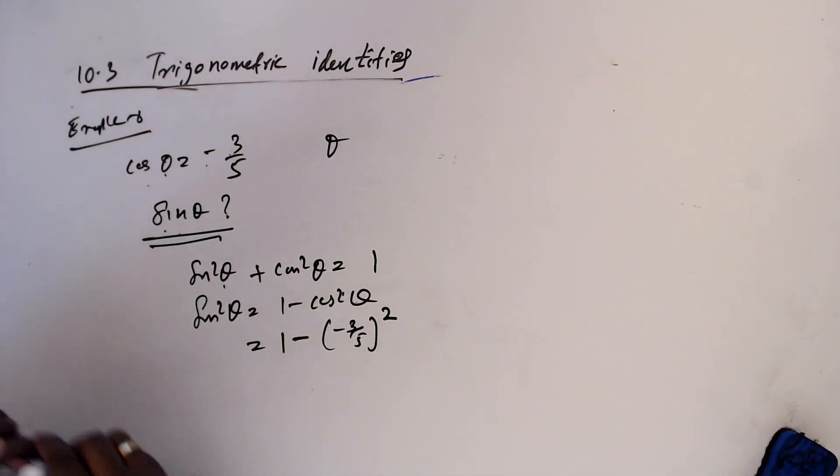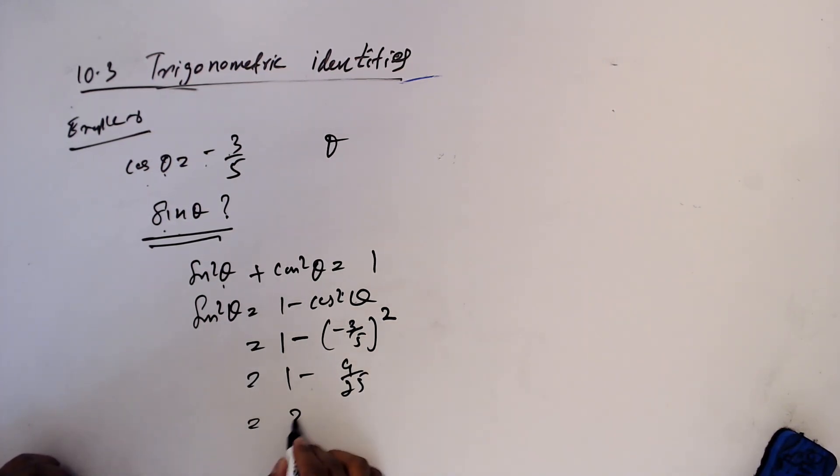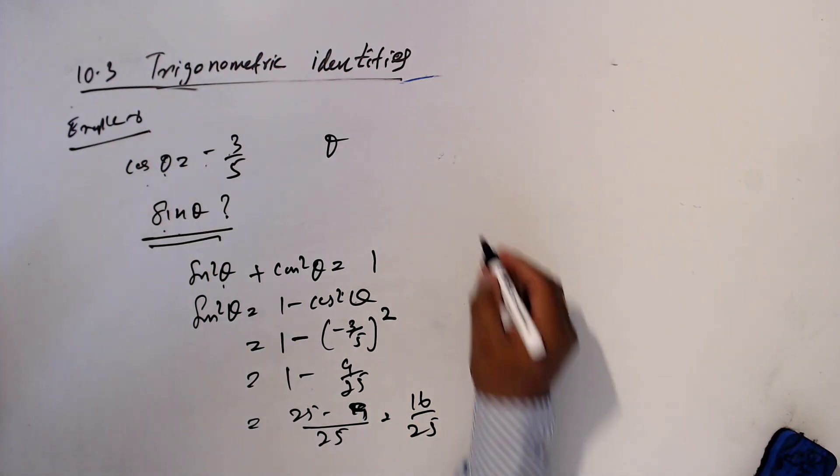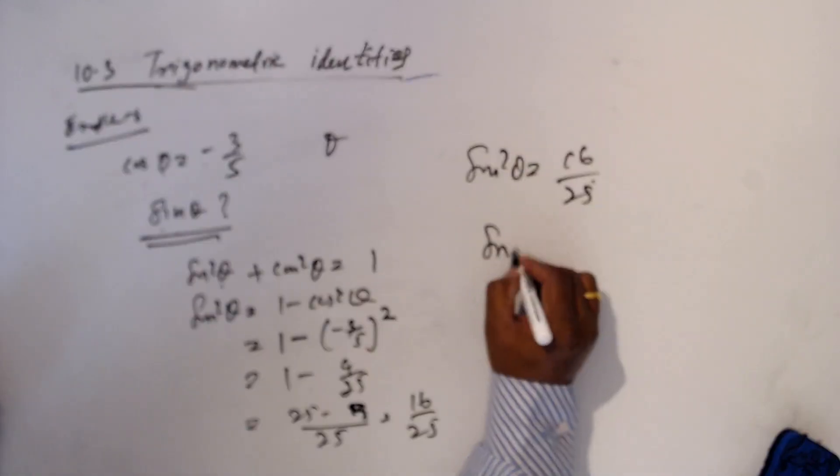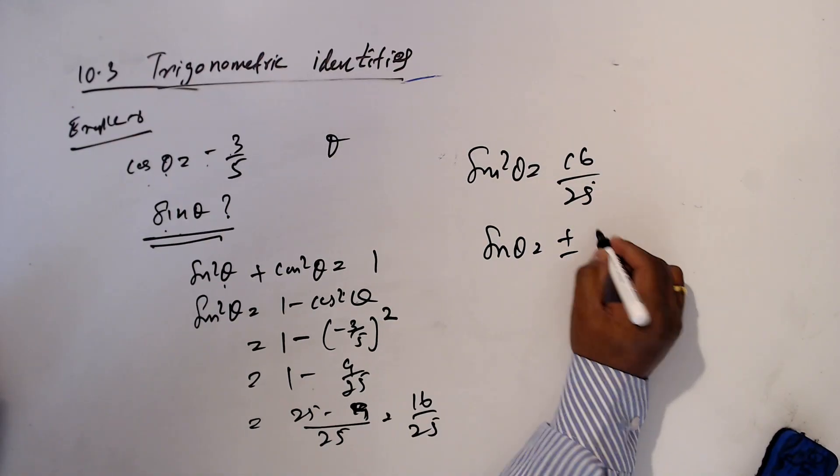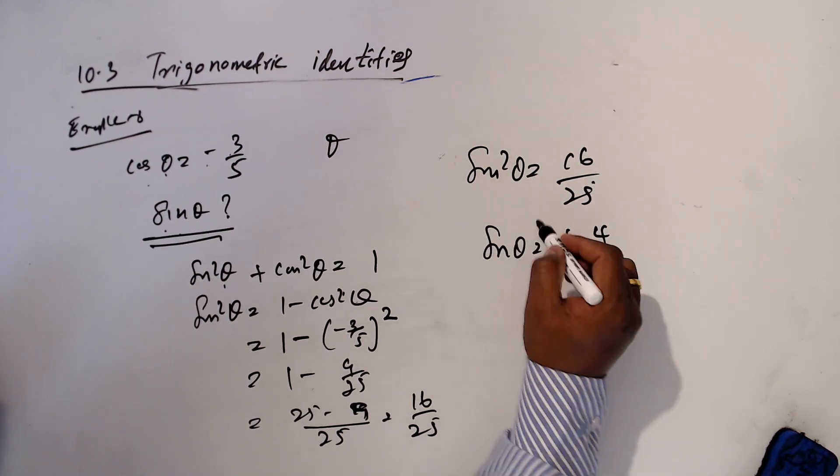Now this is 1 minus, minus 3 square, 9 over 25. It means 25 minus 9 over 25, so this is 16 over 25. So sine square theta is 16 over 25. It means sine theta equal plus or minus 4 over 5 when you take a square root both sides.